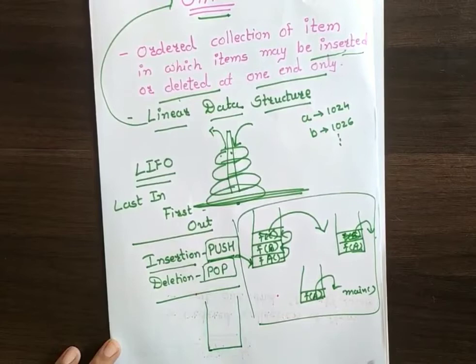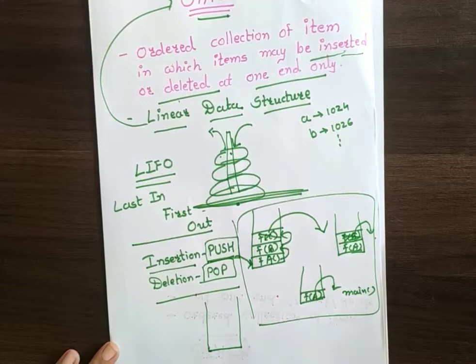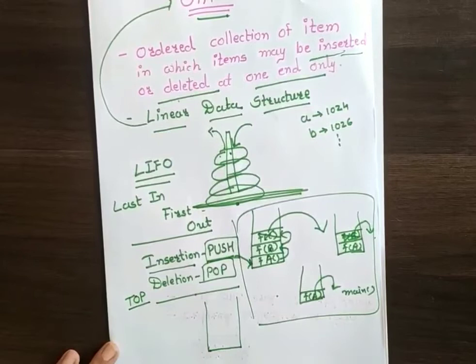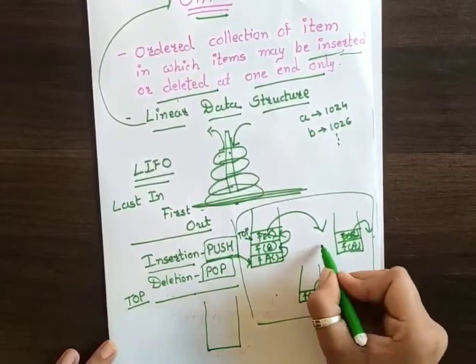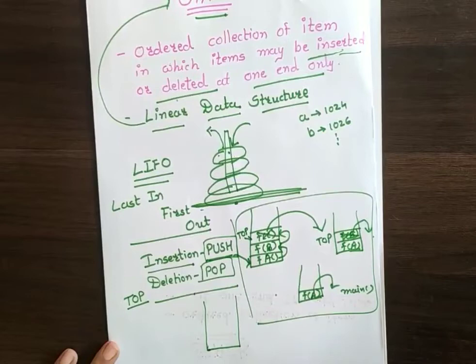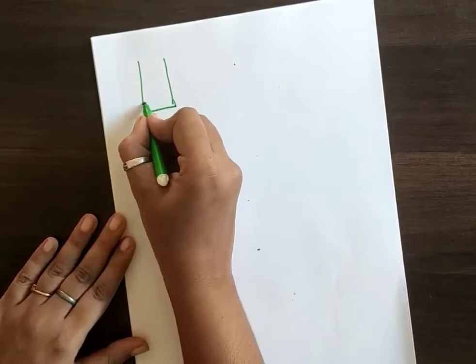Since we can insert and delete at one end only, to keep track of the topmost item in the stack, we have one pointer called the top pointer. The working of the top pointer is just to point out the topmost element in my stack. So if function C is at the top, my top element is function C; here my top element is function B; here I am having function A. Let us take one example — by default I am having this empty stack.